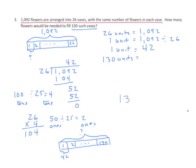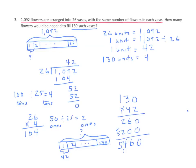So we'll multiply 130 times 42. Let's find the partial products: 2 times 0 is 0, 2 times 3 is 6, and 2 times 1 is 2. Put in my 0 because I'm multiplying from the tens place. 4 times 0 is 0, 4 times 3 is 12 — regroup the 1. 4 times 1 is 4, plus 1 is 5. We'll now find the sum of the partial products and we get 5,460. So 42 times 130 equals 5,460.